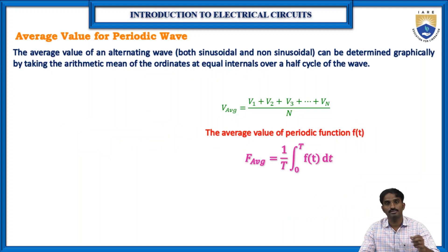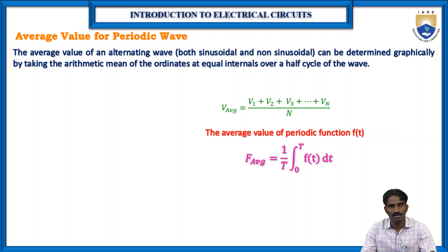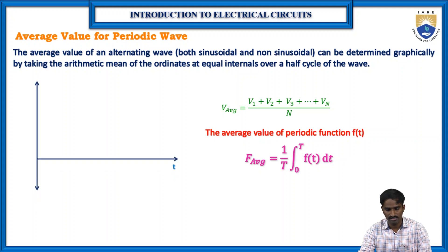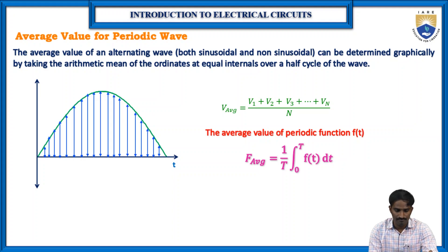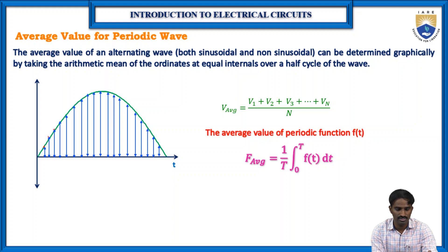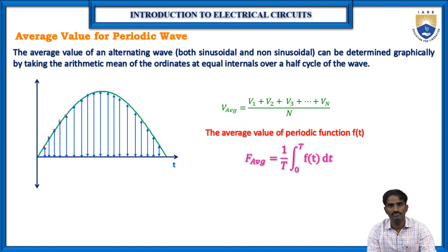Before finding the average and RMS values of various periodic waveforms, let us recall what average value and RMS value are. The average value is the average of an alternating waveform or any periodic waveform, determined by taking the arithmetic mean of the ordinates at equal intervals of the half cycles. For a sine wave, if you take values at equal intervals v1, v2, v3 ... vn, then V_average equals (v1 + v2 + ... + vn) / n.